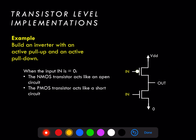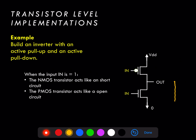We can also build an inverter using active pull-up and active pull-down devices. In this case the active pull-up device is a PMOS transistor and the active pull-down device is still an NMOS transistor. When the input is equal to zero, the NMOS transistor turns into an open circuit, but the PMOS transistor complements that and turns into a short circuit, meaning the output is directly connected to VDD, resulting in an output of one in digital terms. In the opposite situation when the input is one, the NMOS turns into a short circuit and the PMOS is modeled as an open circuit, so the output goes close to zero volts and equals a digital zero.